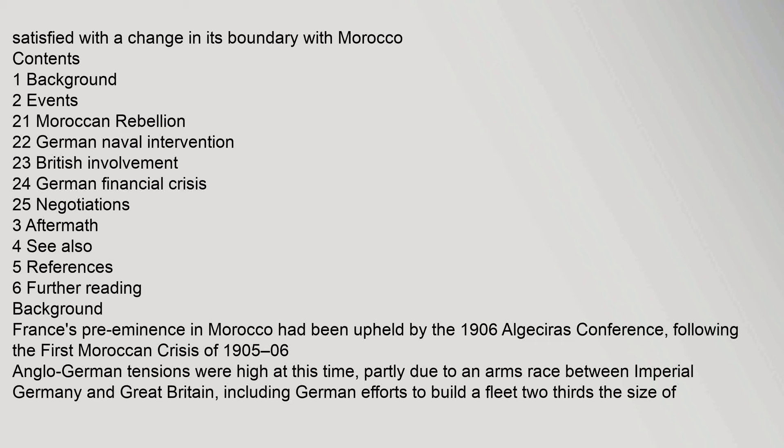The crisis covers the following sections: Background, Events — including the Moroccan rebellion, German naval intervention, British involvement, German financial crisis, and Negotiations — followed by Aftermath, See Also, References, and Further Reading.